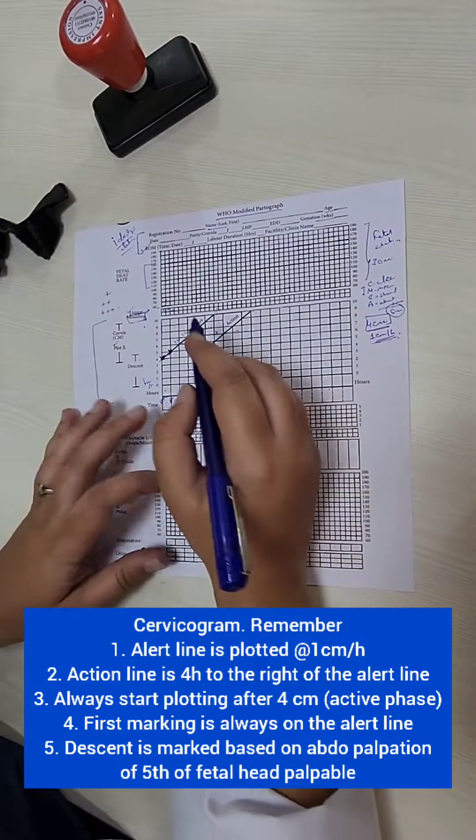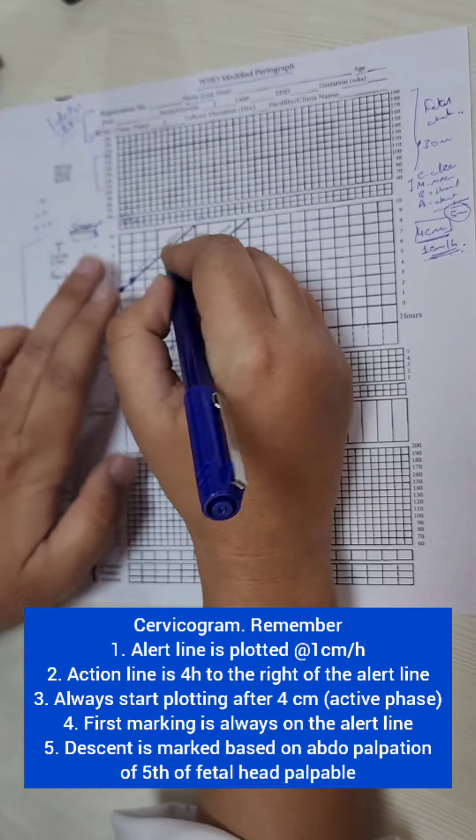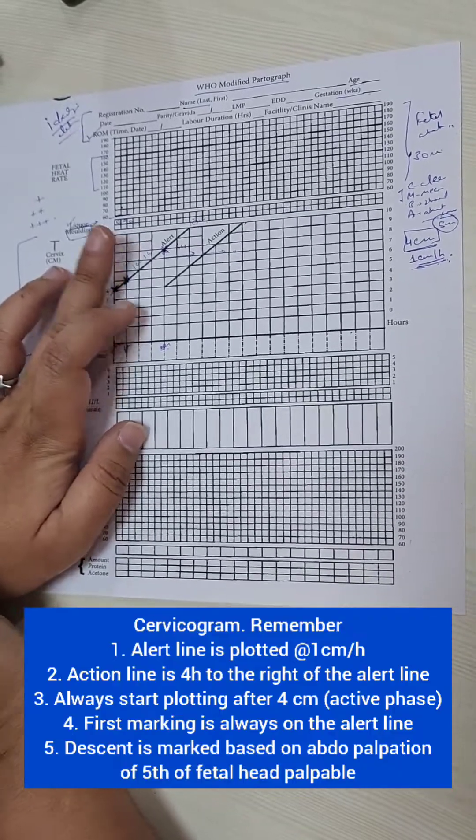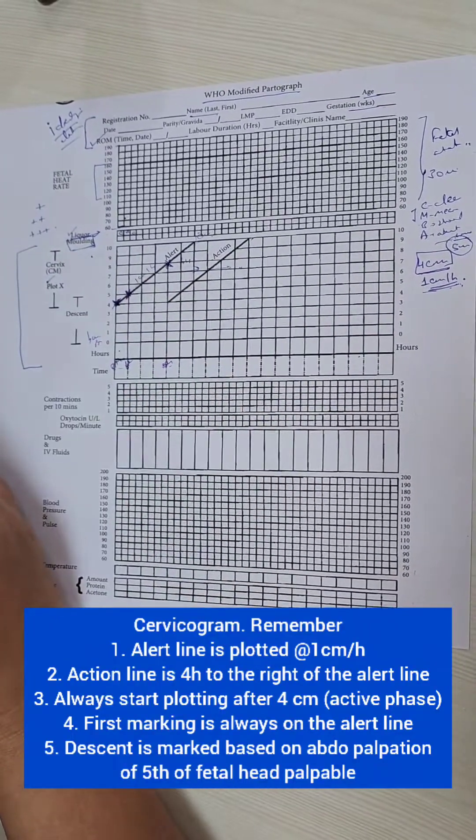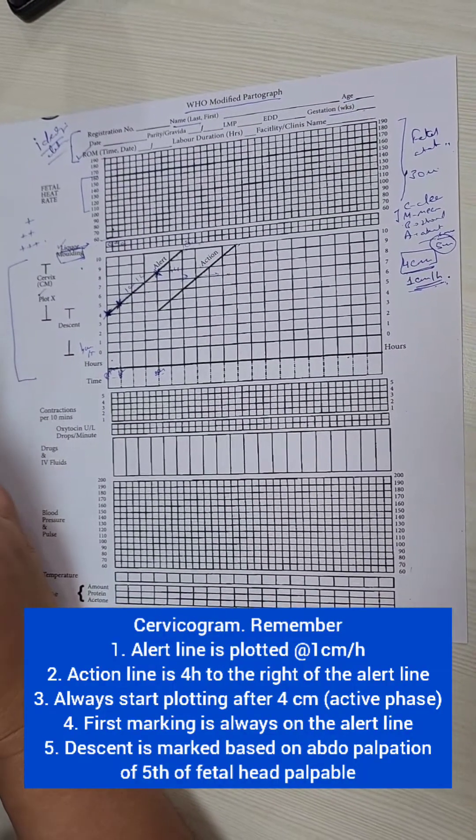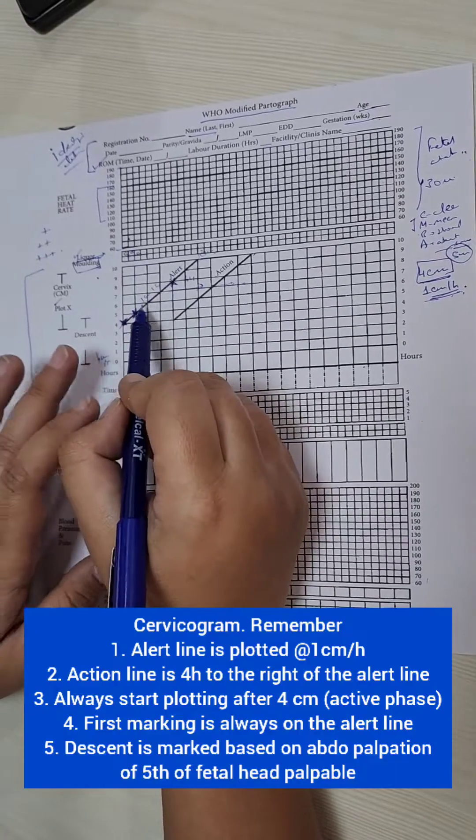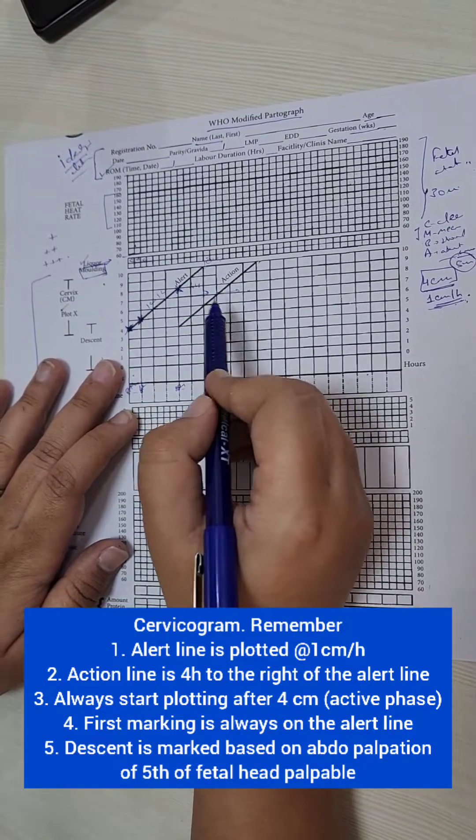So suppose she came at 8 centimeters. Then I will start plotting not from here but from here. At 8 a.m. she is 8 centimeters, I plot it directly here. Why do we plot on the alert line? Because before she comes to me, she came to me at 5 centimeters. Before that I do not know her progress. So that's why we always start on the alert line and then we plot depending on the later finding.